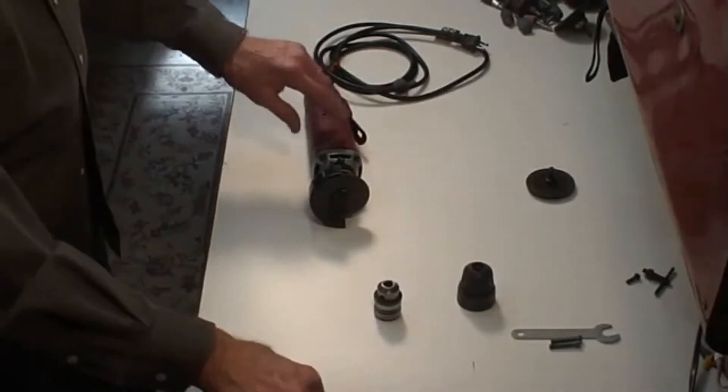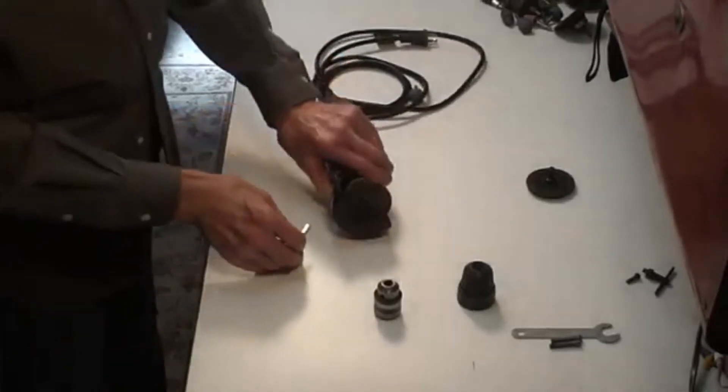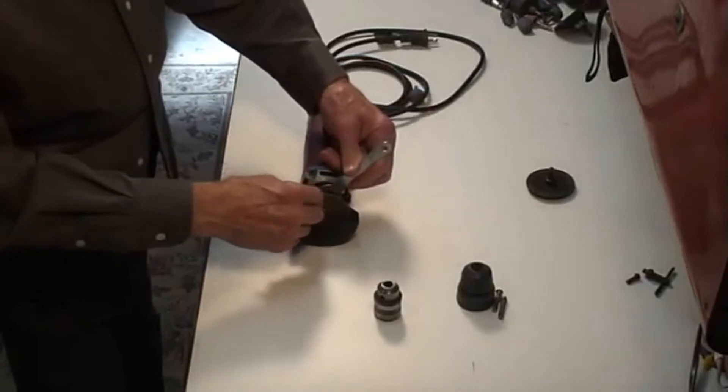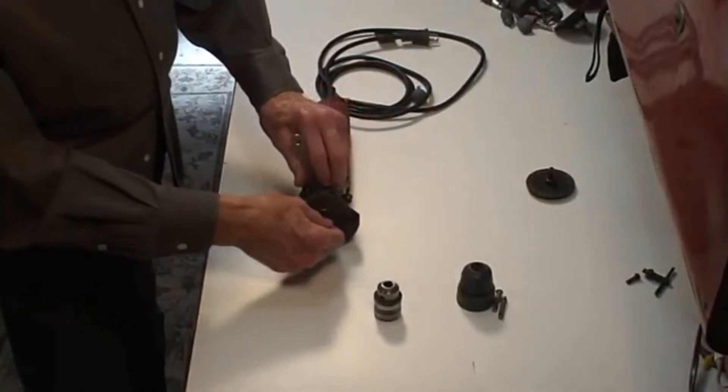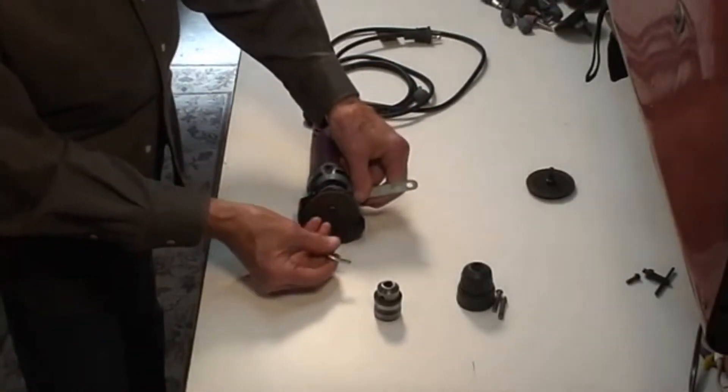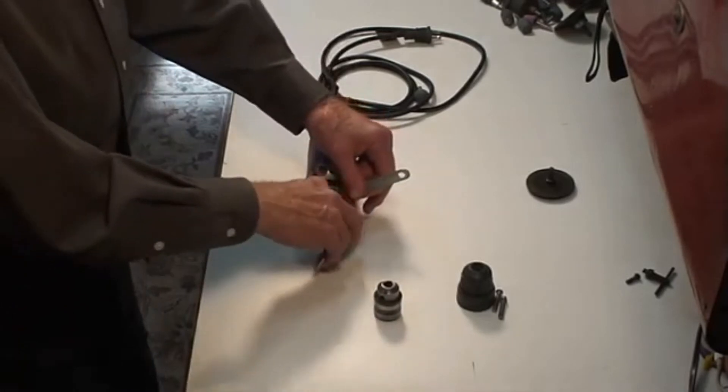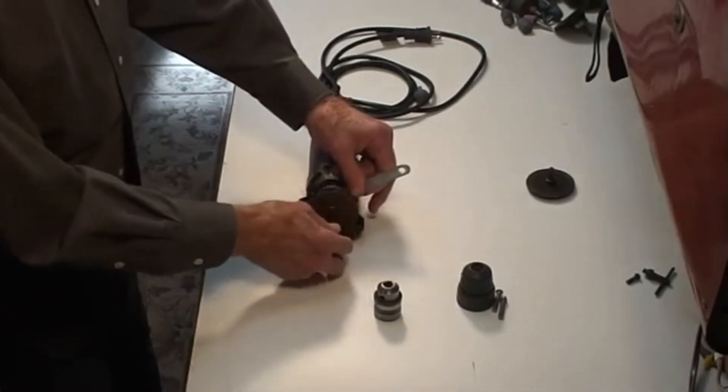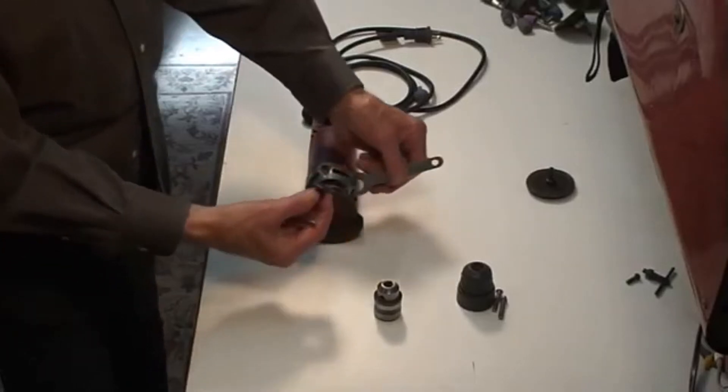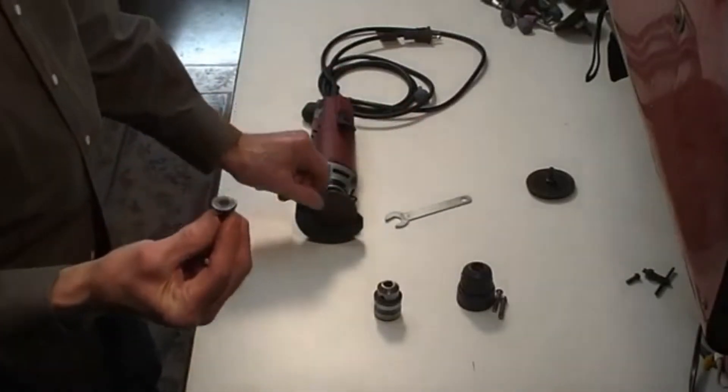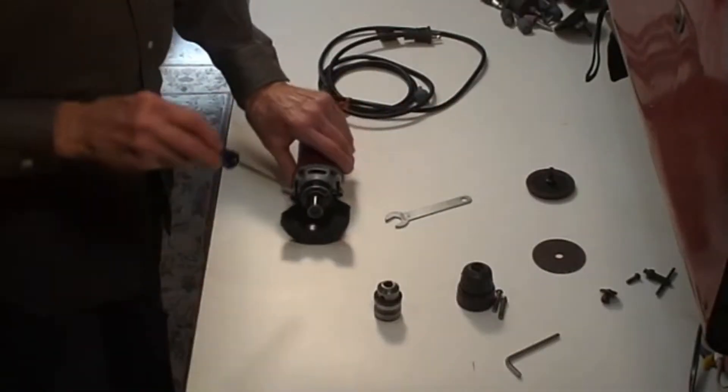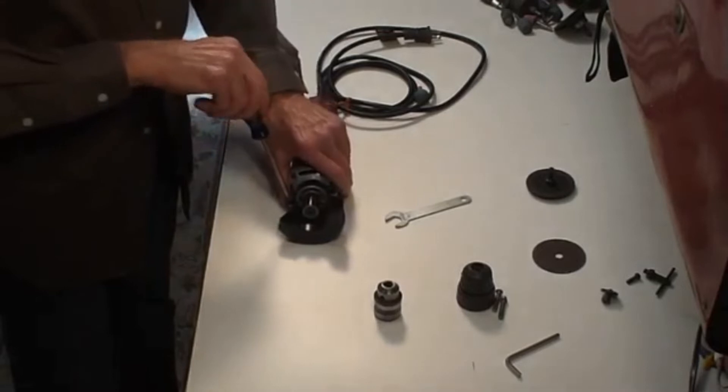So let's take this apart. The tool comes with a socket head screw, six millimeter by 1.0 thread, and a washer, and of course your cutoff tool. Save those. Next we'll take the guard off.